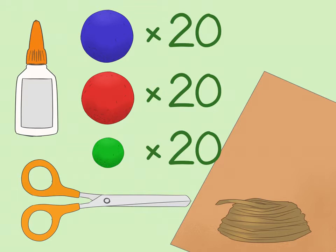Prepare your materials. You will need glue, scissors, cardstock, string, 40 large craft balls - 20 of one color for the protons and the other 20 for the neutrons in a different color, and 20 small craft balls for the electrons.